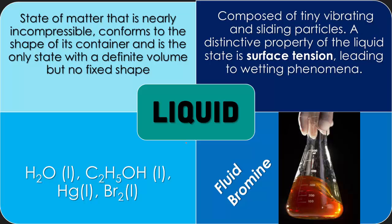Liquids are composed of tiny vibrating and sliding particles. That's why they slosh around each other. A distinct property of a liquid is surface tension, which leads to the wetting phenomenon. When you stick your finger in a glass of water, surface tension takes the water droplets and sticks it onto your finger, and it's wet.